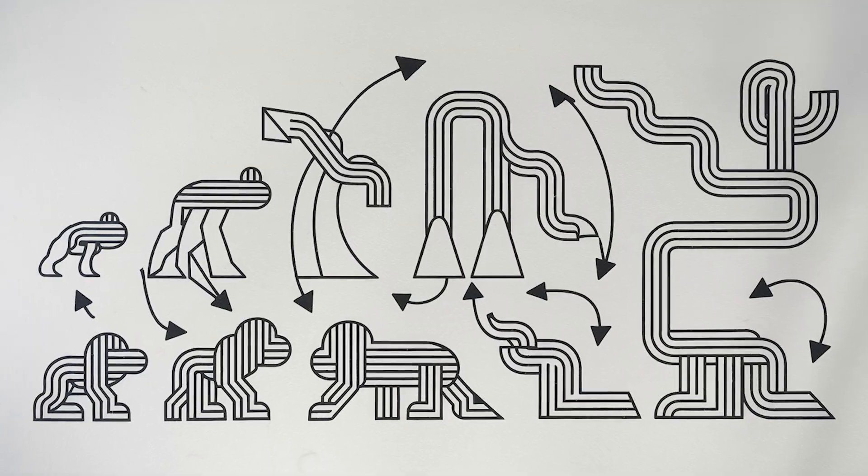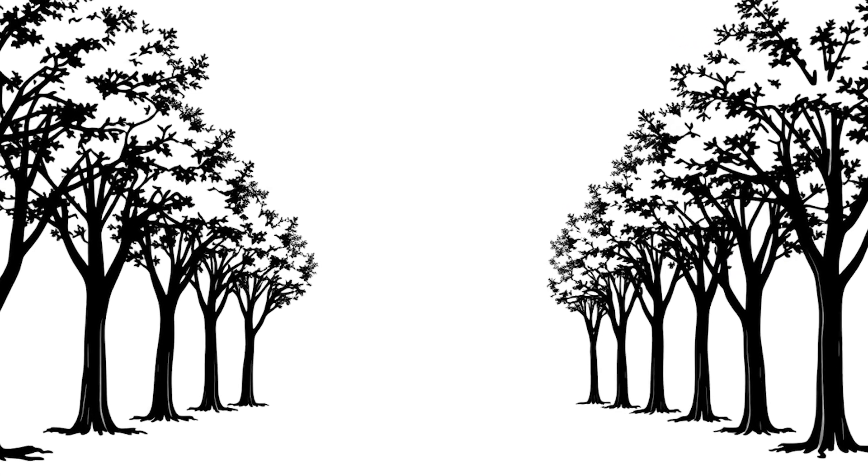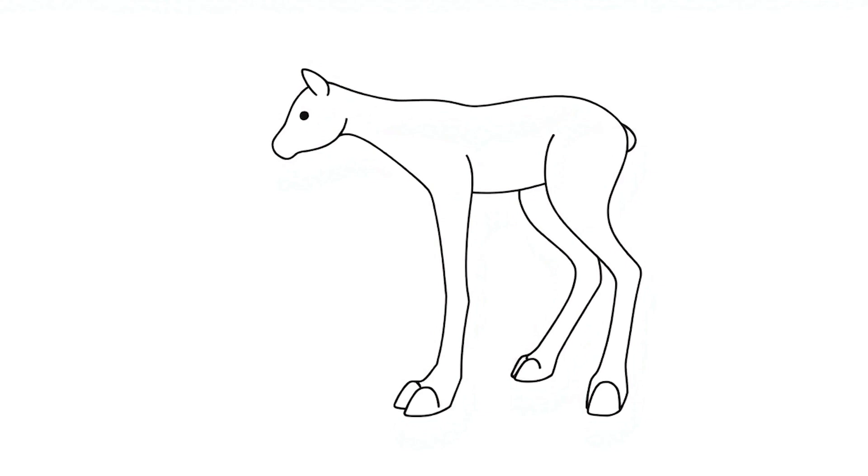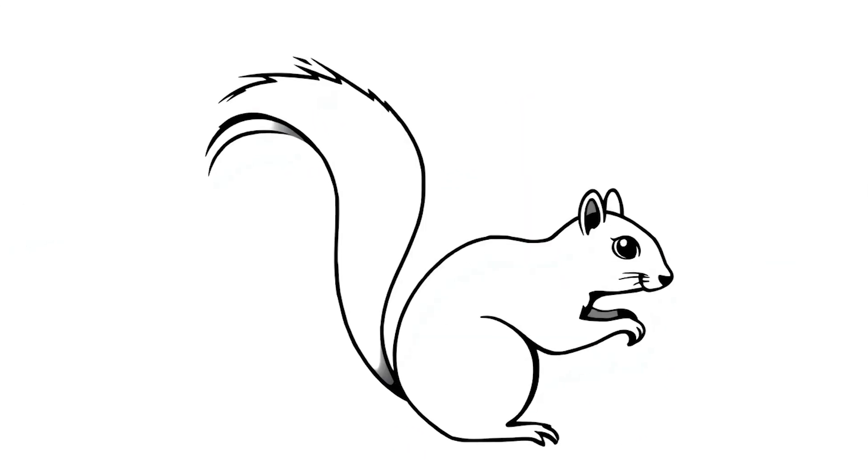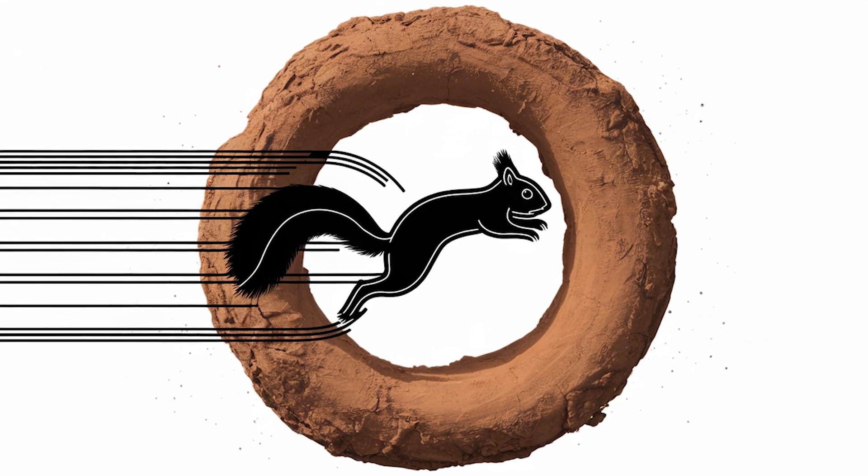Plants and animals would evolve in crazy ways. Trees might grow curved to deal with the weird gravity. Animals would develop special feet to grip the curved ground. Imagine squirrels that could jump through the hole as a shortcut to the other side.